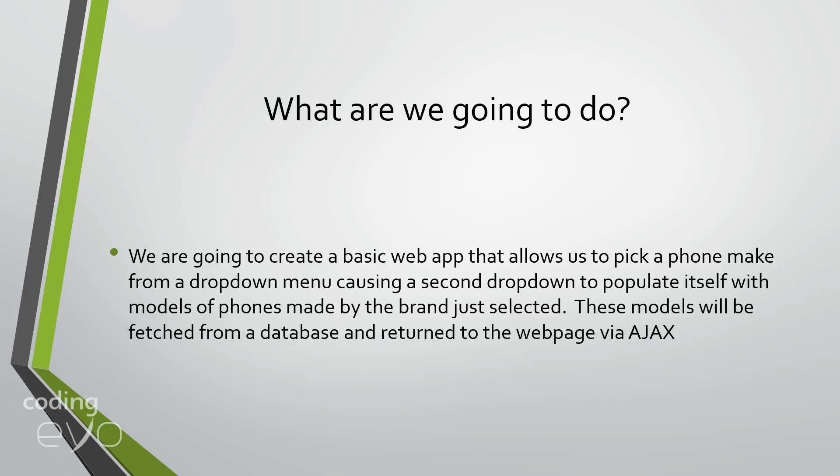What are we going to do exactly? How are we going to achieve this? We're going to create a basic web app that allows the user to pick a phone make from a drop down menu, causing a second drop down lower down in the form to populate itself with models of phones made by the brand just selected. These models will be fetched from a database and returned to the web page via Ajax.